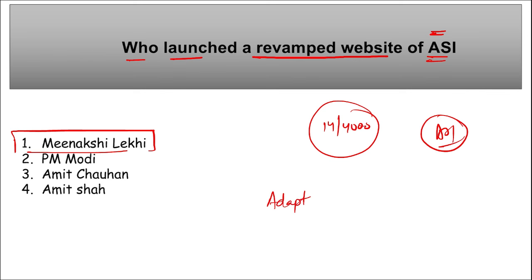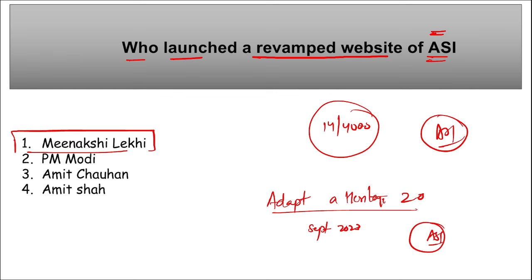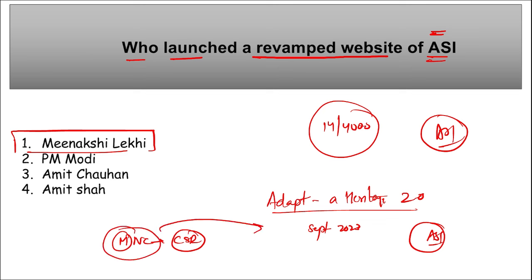Adopt a Heritage 2.0 allows MNCs to adopt ASI monuments using their Corporate Social Responsibility (CSR) funds, making preservation of 14 out of 4,000 ASI heritage sites an inclusive process under the theme 'Sabka Saath Sabka Vikas Sabka Prayas.' ASI Director General is Yadubir Singh Rawat, headquartered in New Delhi, established in 1861.